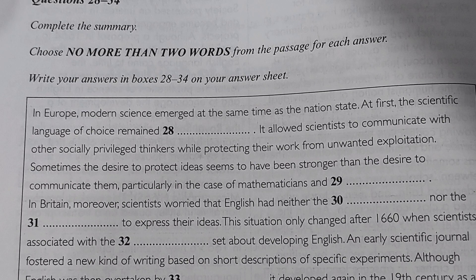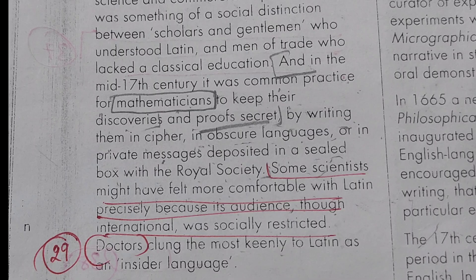Particularly in the case of mathematicians and blank. Baat karne se zyada strong tha idea ko protect karna — ek toh mathematicians ke case mein aur doosra. And in the mid-17th century, it was common practice for mathematicians to keep their discoveries in proofs secret, by writing them in cipher, in obscure languages, or in private messages deposited in a sealed box with the Royal Society.